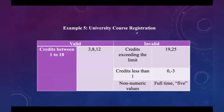For university course registration, say credits must be between 1 and 18. Any value within that range is a valid class. Credits exceeding the limit, such as 19 or 25, are invalid. Credits less than 1, such as 0 or any negative value, are also invalid. Non-numeric values such as 'full time' or the string '5' instead of the integer 5 fall under the invalid class. These are a few examples of equivalence partitioning.